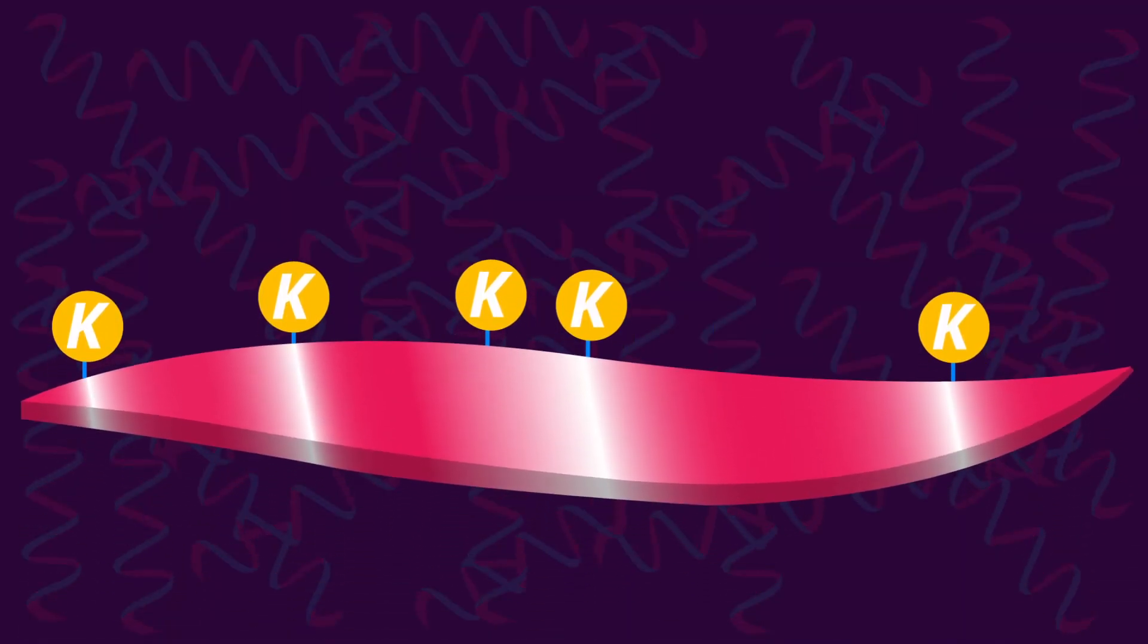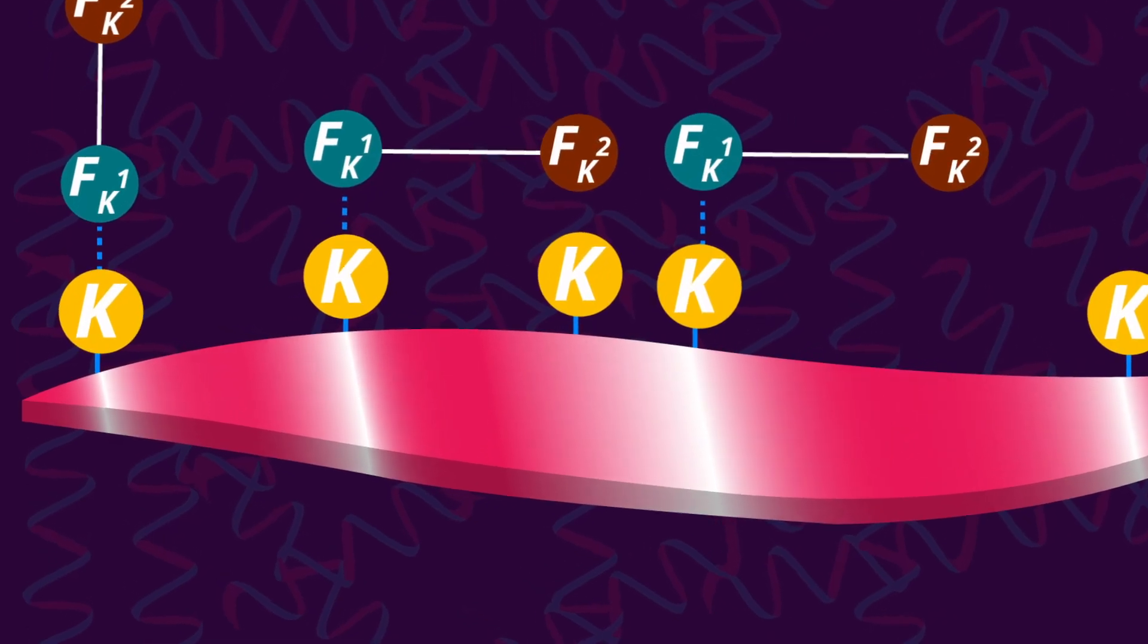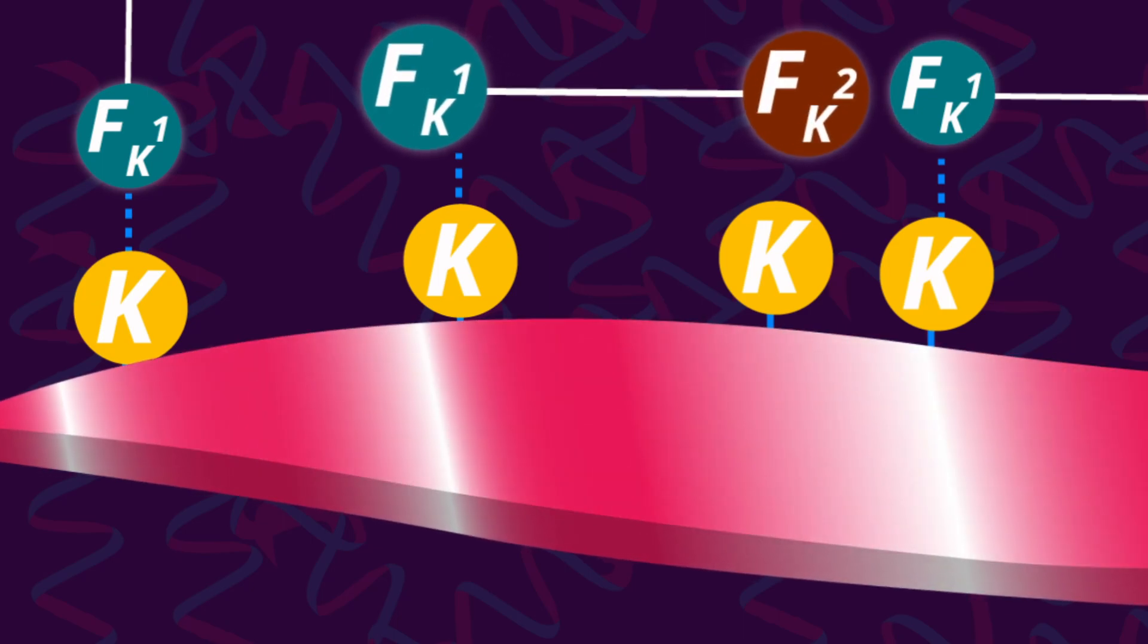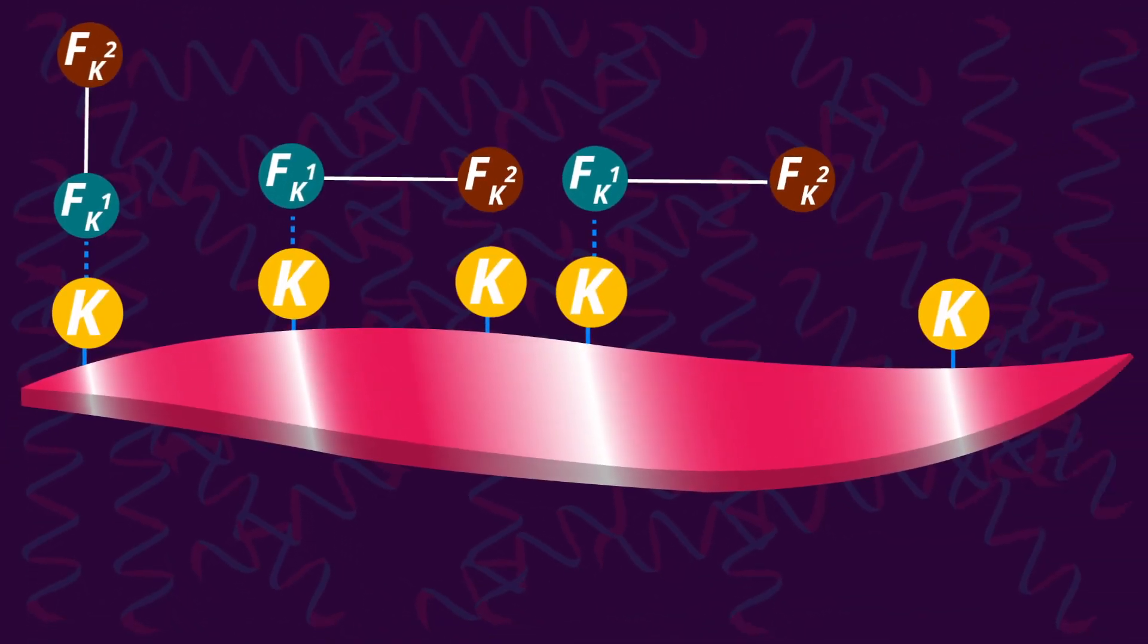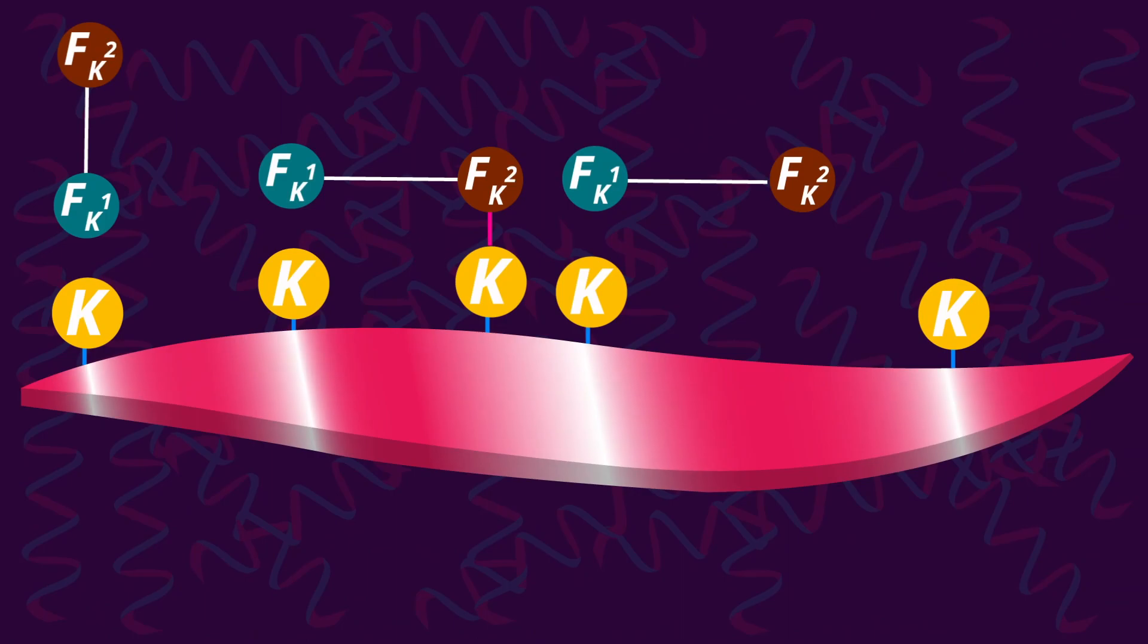The FK1 segment of the reagent chemoselectively reacts with the available functional groups on the protein, and the spacer forms weak interactions with the surface of the protein. This brings the FK2 segment close to the protein, and it forms a covalent irreversible bond with the target site.